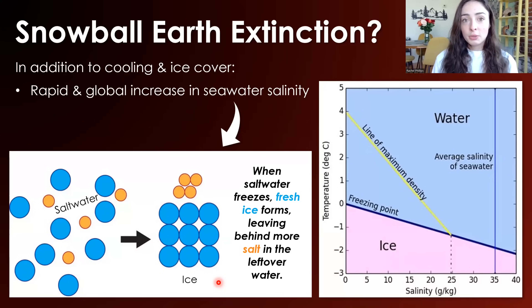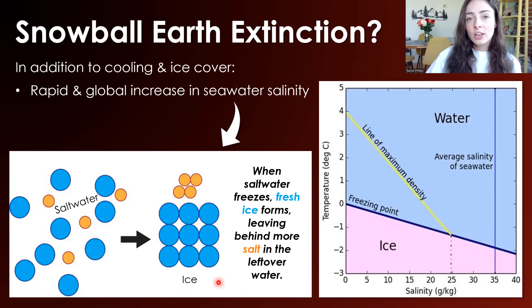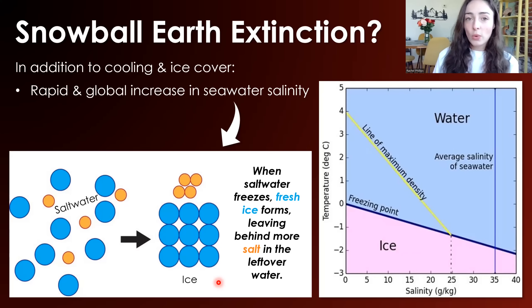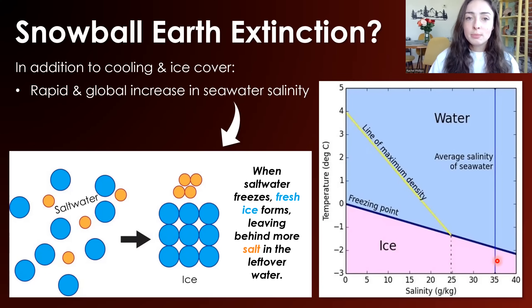This likely increased biological devastation, because life doesn't like rapid changes in ocean chemistry — whether pH, salinity, or temperature. Interestingly, the salinity increase may also have prevented Earth from going into an even more drastic runaway Snowball Earth condition, because the more saline water is, the lower its freezing point — and this might have prevented further freezing of that really saline water.